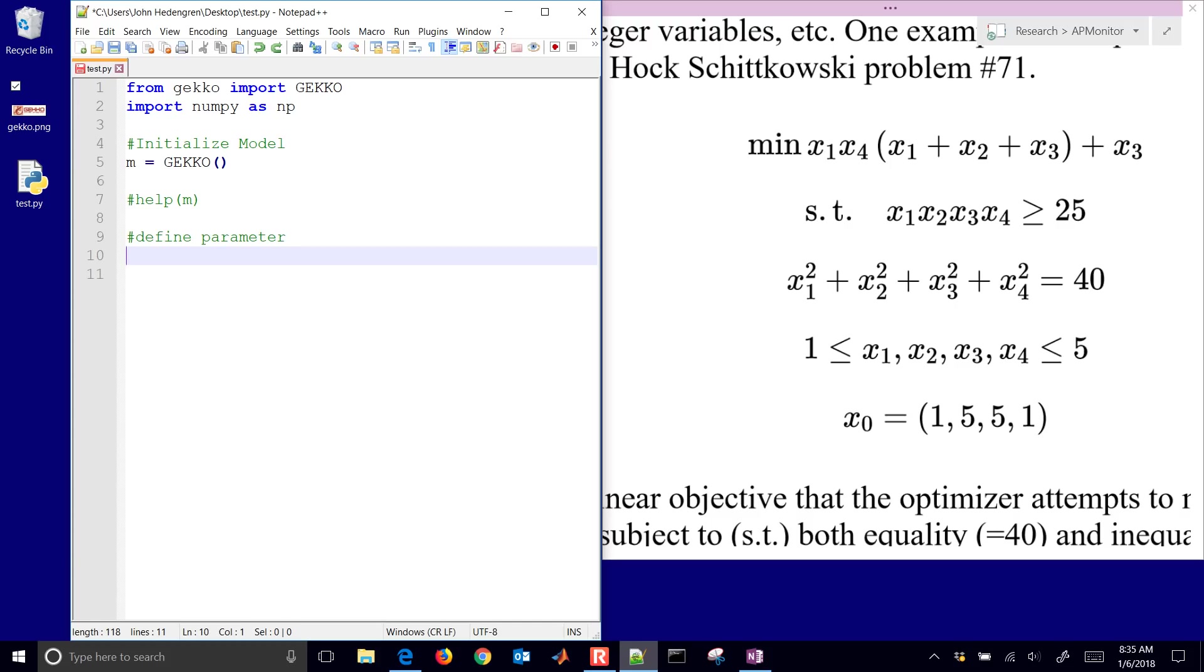We'll define a parameter first of all. This is not necessary, but just to show that we can set a parameter. We'll set M.param and give it a value of 40. This is going to be the thing that's going to be on the right side of our equation over here. I just set this up as a parameter.